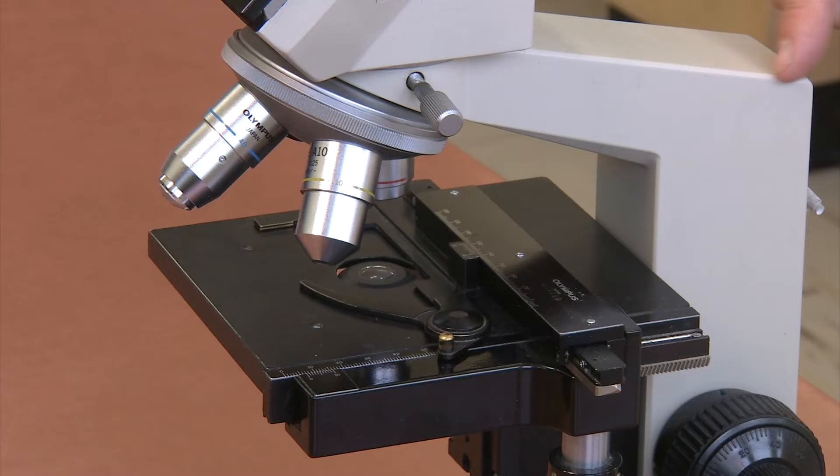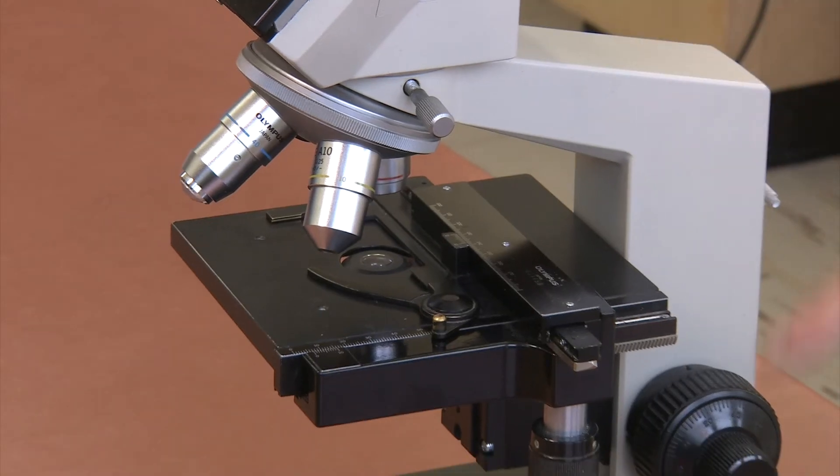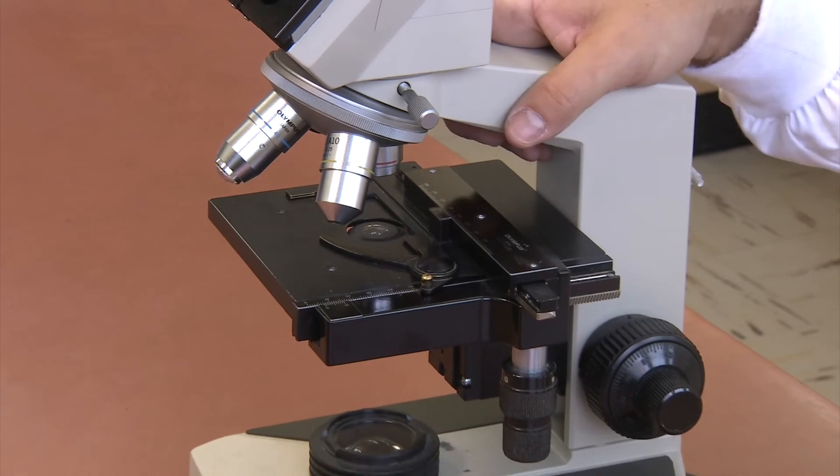All of these parts are attached to the arm of the microscope, which runs from the binocular tube to the base of the microscope.